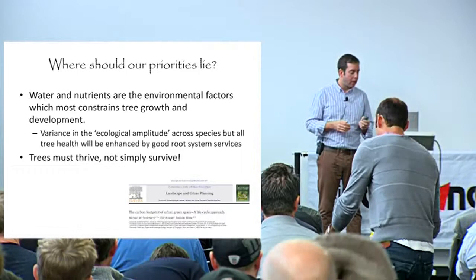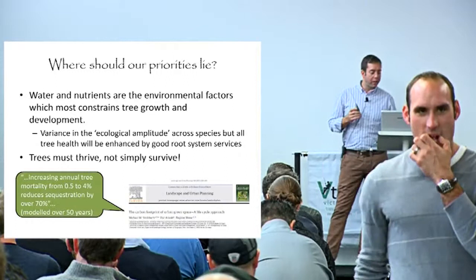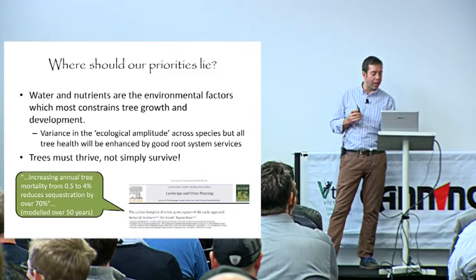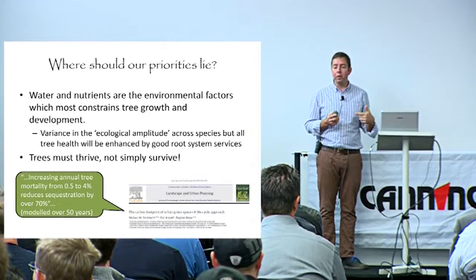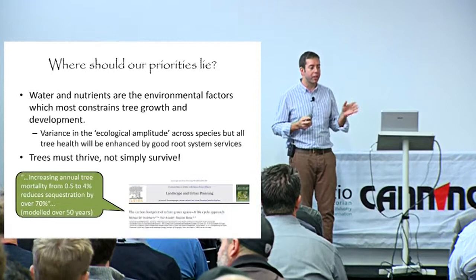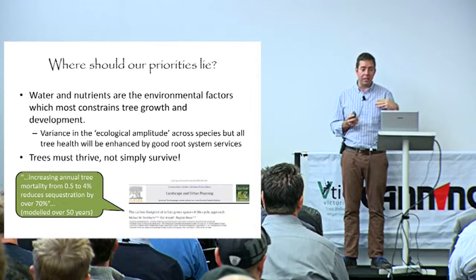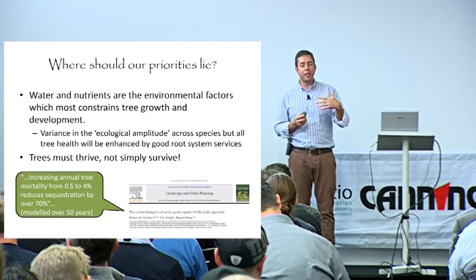Trees have got to thrive. I'm not really interested in trees surviving in the urban environment - they've really got to thrive to deliver. There's an interesting paper that came out a couple of years ago. The quote I pulled out is: increasing annual tree mortality from 0.5% to 4% reduces carbon sequestration by over 70%. That's modelled over 50 years and illustrates the value of having trees that persist within our landscape.